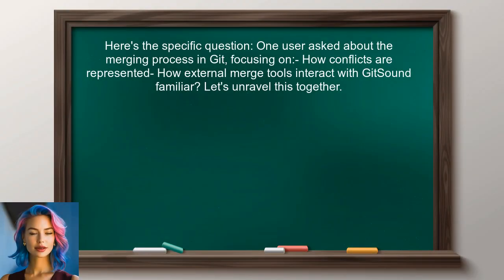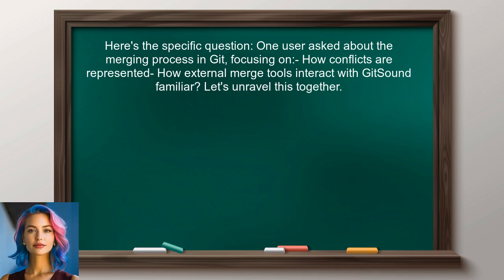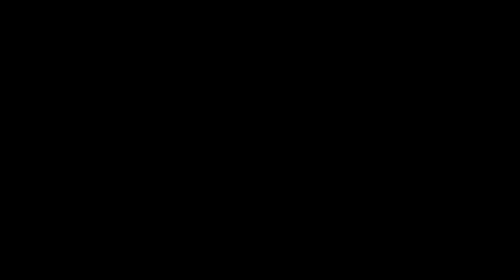Let's break down the specific question at hand. One user recently asked about the merging process in Git, particularly how conflicts are represented and how external merge tools interact with Git's system. Sound familiar? If so, let's unravel this together.